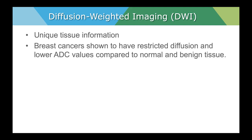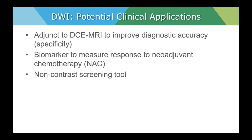Diffusion-weighted imaging provides unique tissue information. Breast cancers, like other neoplasms, have been shown to have restricted diffusion with lower ADC values compared to normal and benign tissue. This can be another sequence added to improve specificity — for example, a non-fat-saturated T1-weighted image can help identify lymph nodes or fat necrosis to avoid patient recalls and unnecessary biopsies. DWI has the potential to do this as well. It can also be used to measure response to neoadjuvant chemotherapy in the early or short term. There is also hope that DWI could be used as a non-contrast breast MRI screening tool, but that has not been realized quite yet.